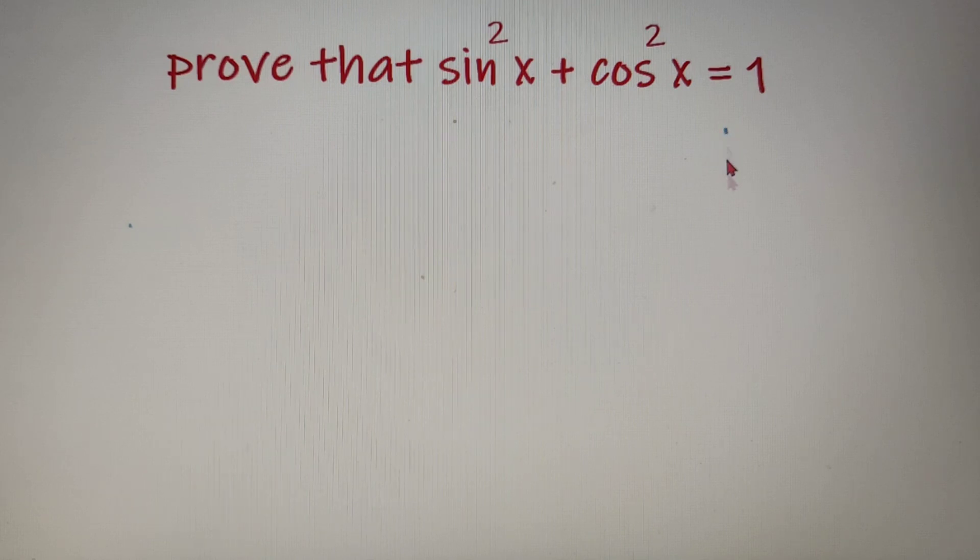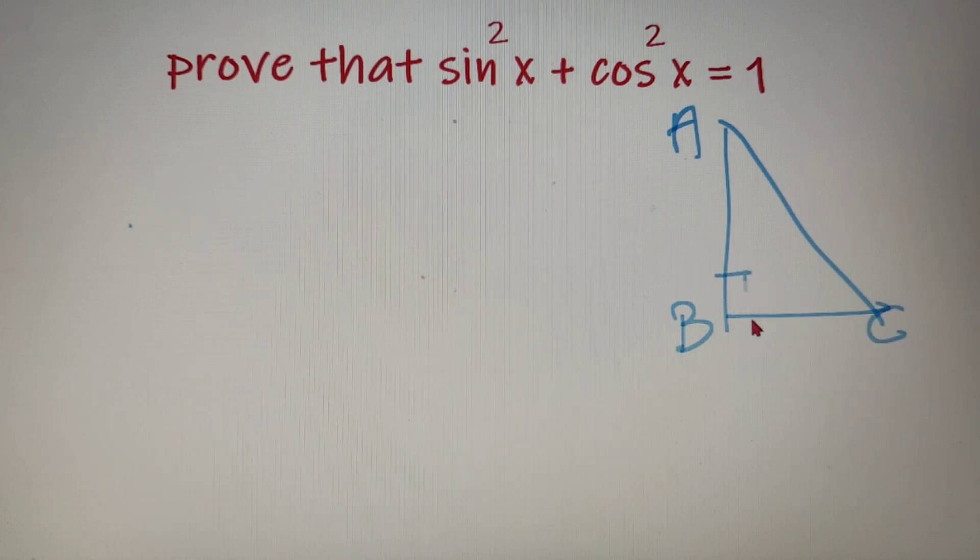Now before starting with the proof, let's draw a very simple right-angled triangle ABC. So over here we have a right-angled triangle ABC which is right-angled at the vertices B.